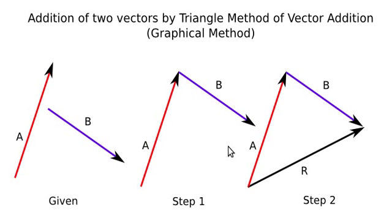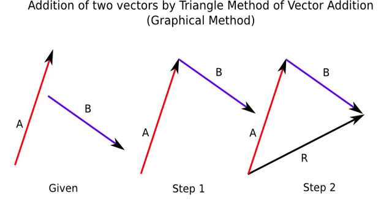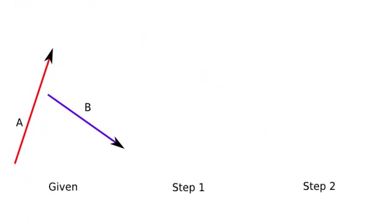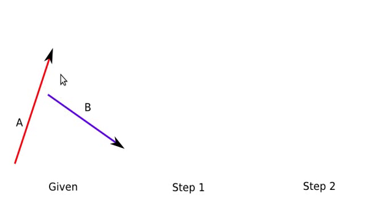You may ask: what if I arranged the vectors the other way — with the head of B at the tail of A? Then what will be the resultant? Let me show you that. Now I will arrange the vectors such that the head of B is at the tail of A.